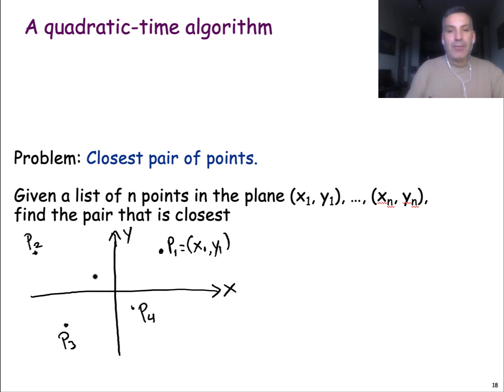I have a total of n points—this is my input size. And the question is, can you find the pair of points that is at the smallest distance? This is the closest pair of points problem. So in this case probably this is the pair of points that are closest to each other. How would you do that?